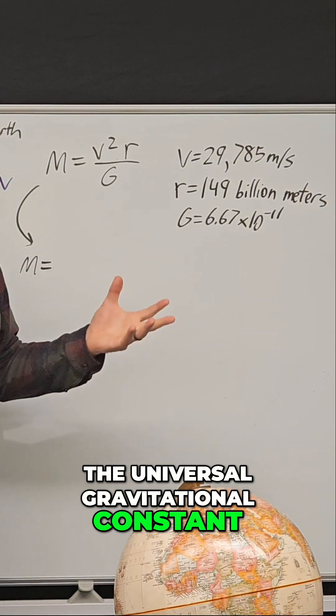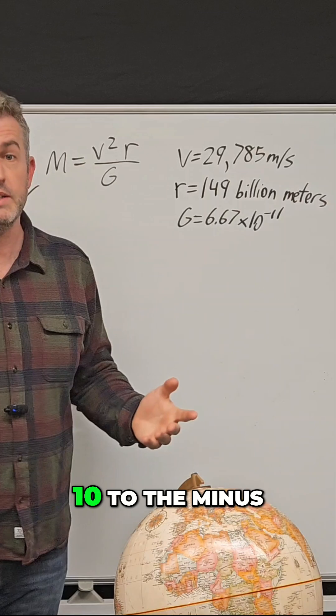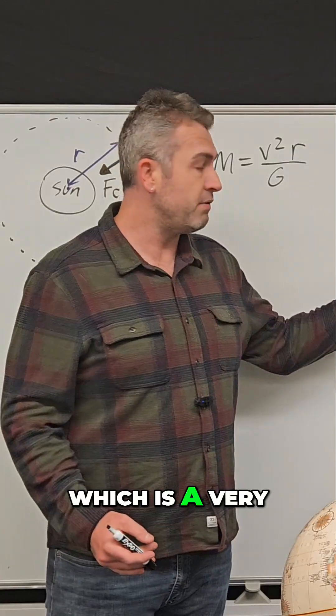And G, the universal gravitational constant, is 6.67 times 10 to the minus 11th power, which is a very tiny number.